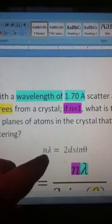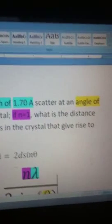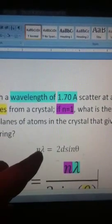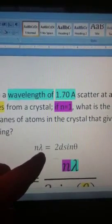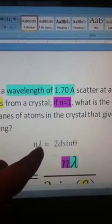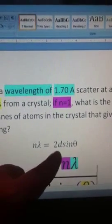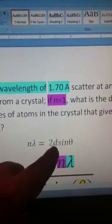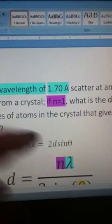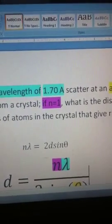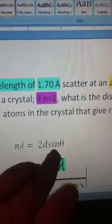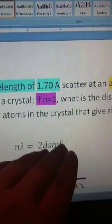So, n, which is the diffraction number, is here, times lambda, and all lambda is is the wavelength. Just a fancy little Greek symbol for wavelength. Equals 2 times d, which is the distance, times the sine of theta. And all that is is the angle.